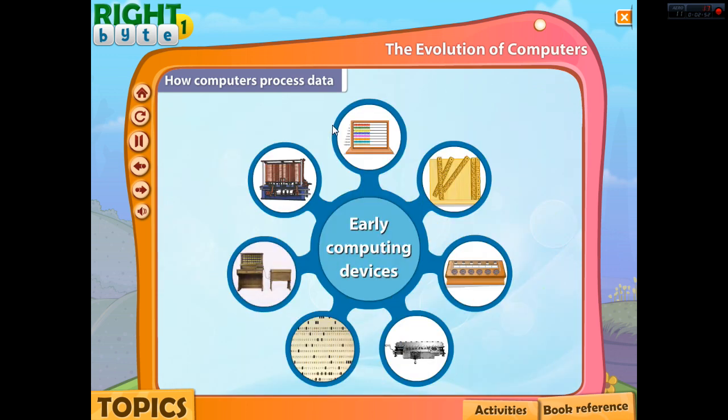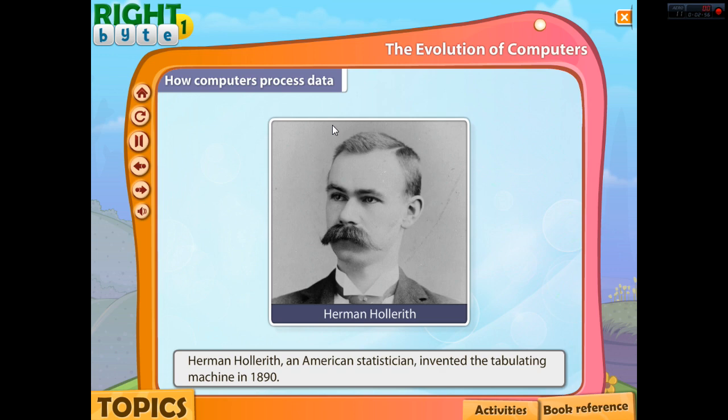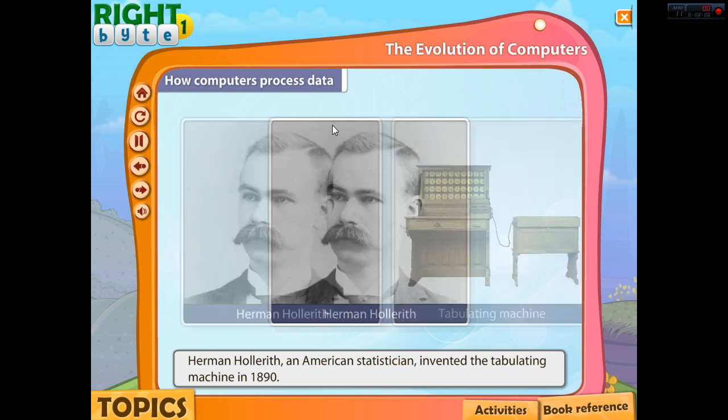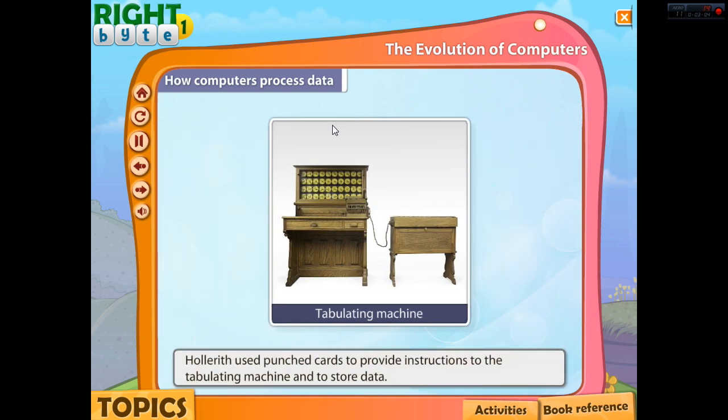The Tabulating Machine. In 1890, Herman Hollerith, an American statistician, invented a machine called the Tabulating Machine. Hollerith used punched cards to provide instructions to the Tabulating Machine and to store data. This method introduced the concept of storage devices, which led to the evolution of modern computers.